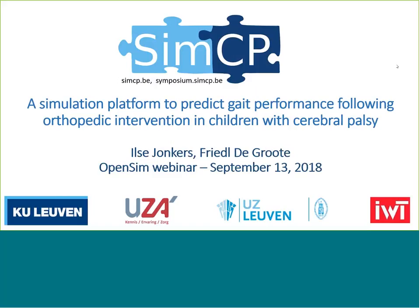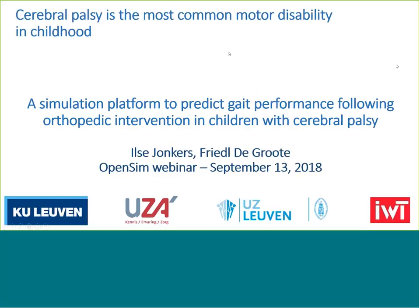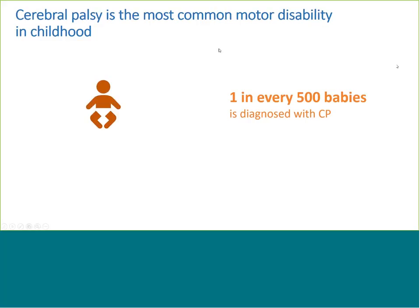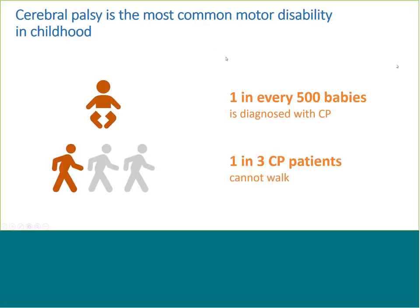Cerebral palsy, often abbreviated to CP, is the most common motor disability in childhood. It is caused by oxygen deficits to the developing brain prior to, during, or shortly after birth. It results in a brain lesion that will become obvious during the development of the child. Cerebral palsy results in a plethora of dysfunction and impairments, of which inability to selectively control the muscles, resulting in ambulatory dysfunction, is only one.